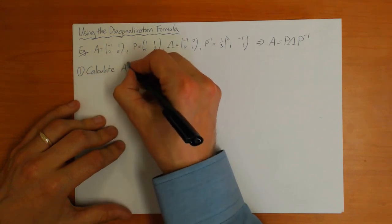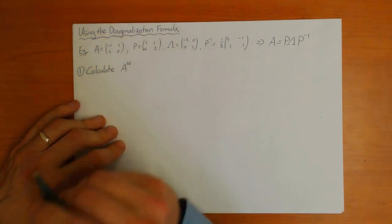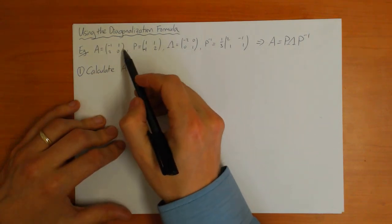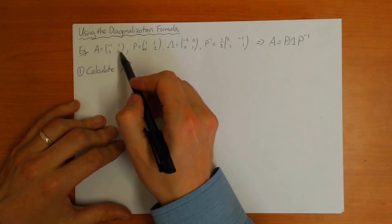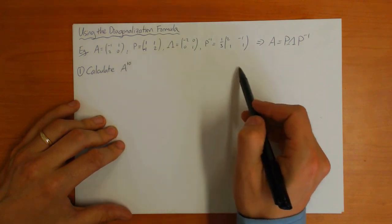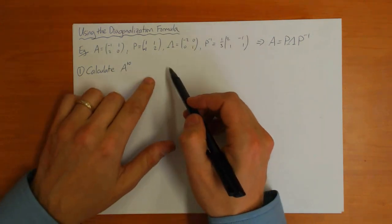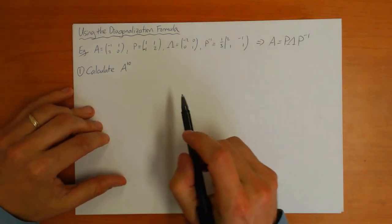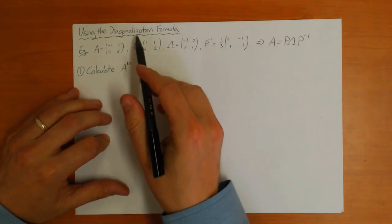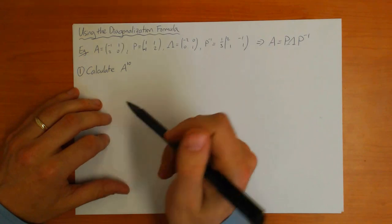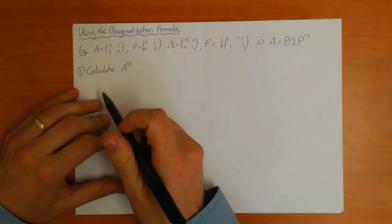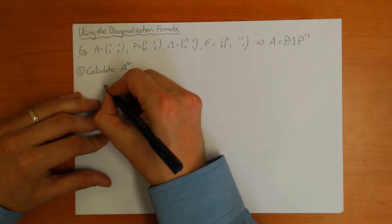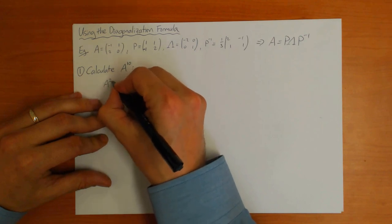The first thing you can do is calculate A to a certain power. Let's try to calculate A to the power 10. That's going to be a lot of work if you write out the matrix A ten times and multiply each matrix together — that's a lot of work. So we don't want to do it that way; we want to find a better way. And the diagonalization formula gives you this better way.